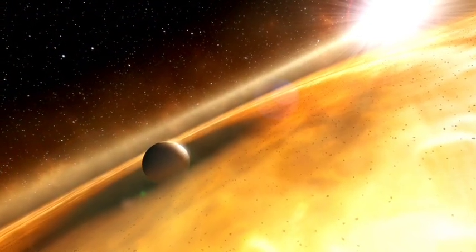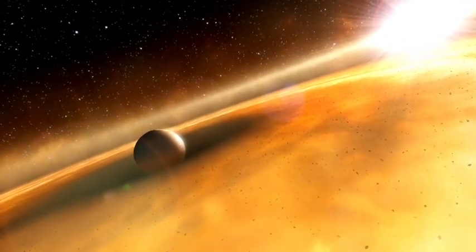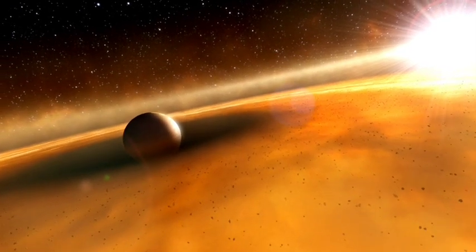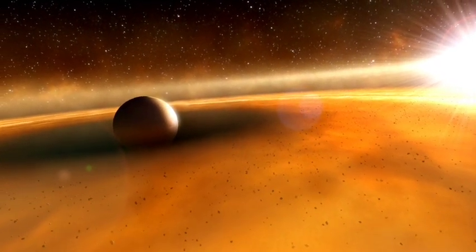So Hubble managed to peer through the glare and view the planet directly. Then clues were gathered to paint a picture of this exotic world. The shape of the disk hints that the planet is at most three times the mass of Jupiter.